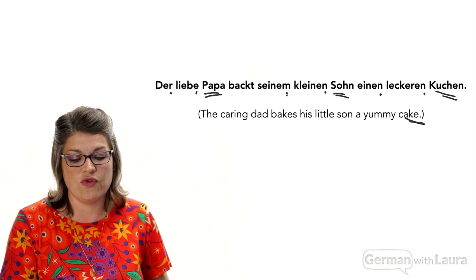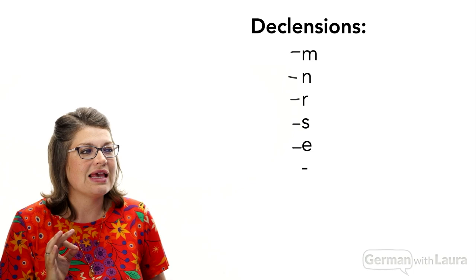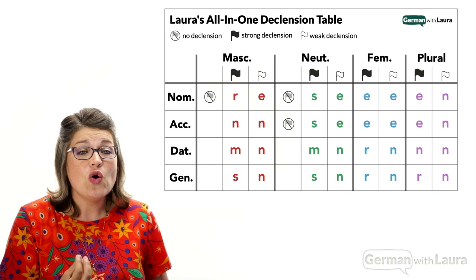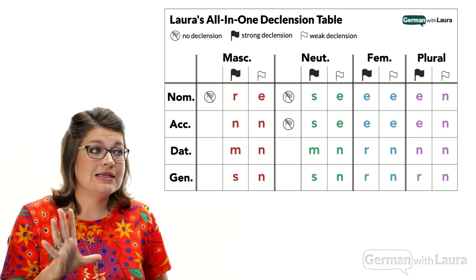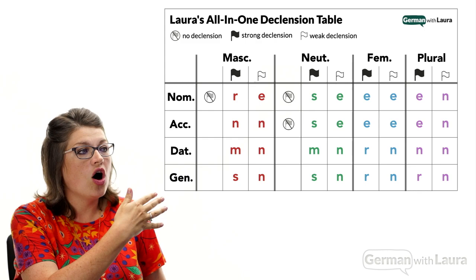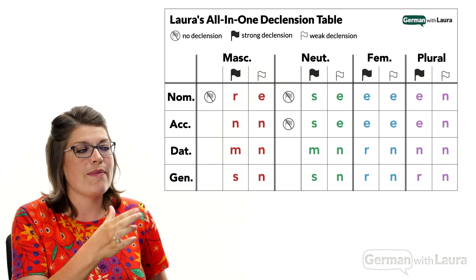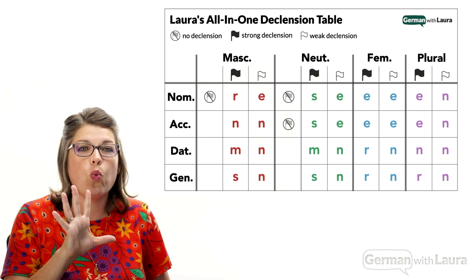We have a total of six different declension options: M, N, R, S, E, and then no declension whatsoever. In our all-in-one declension table, we have those six options occurring throughout in different combinations — you can see R's and N's and S's and E's all over the place. So on a basic level, we can say that all of those different variants — the five to seven different versions of every noun in German — are a matter of these six different declension options.